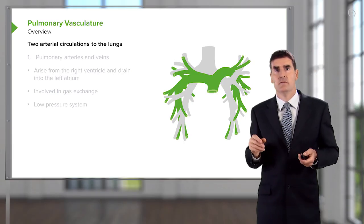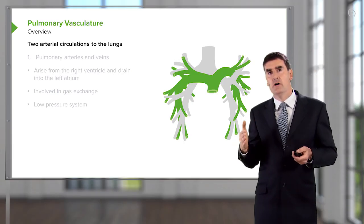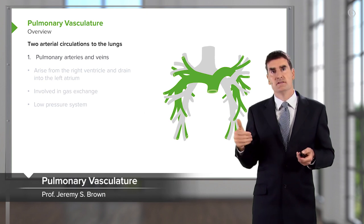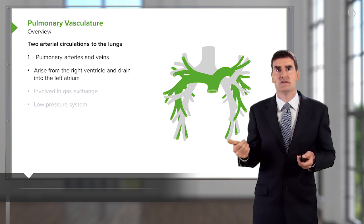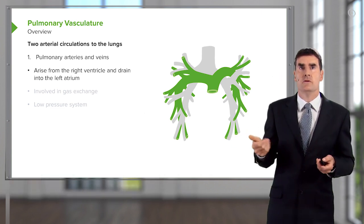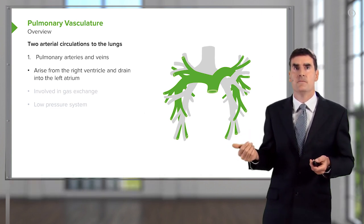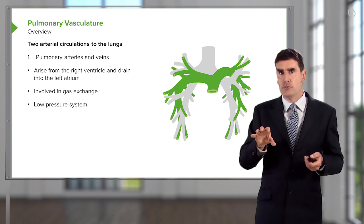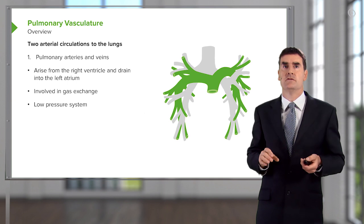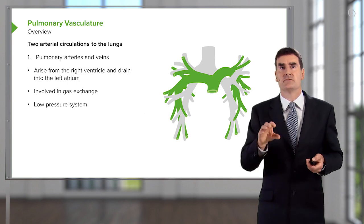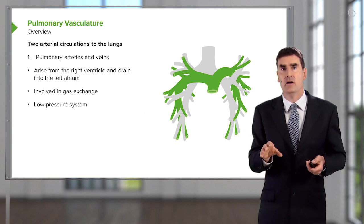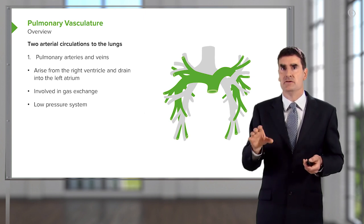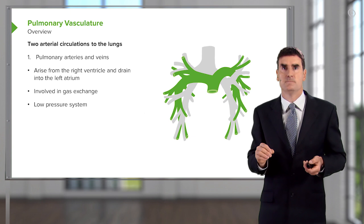The pulmonary vasculature. There are two arterial circulations to the lungs: the pulmonary arteries and veins, which arise from the right ventricle and drain into the left atrium. Those are involved in gas exchange as a low pressure system. The normal pressure of pulmonary arteries is about 20-25 mmHg maximum, whereas for most people systemic circulations are 100-110 mmHg.